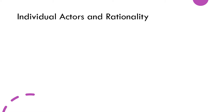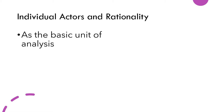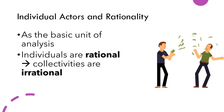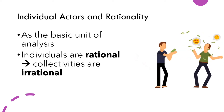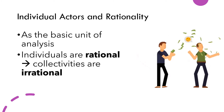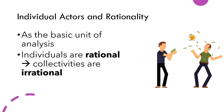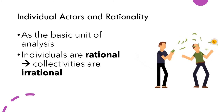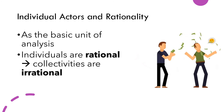The first concept we need to understand is the individual. For rational choice theory, the individual is the basic unit of analysis. The basic idea is that individuals by themselves are rational — they calculate costs and benefits and decide what's best for them. However, when you aggregate these individual rational decisions, this leads to irrational outcomes.